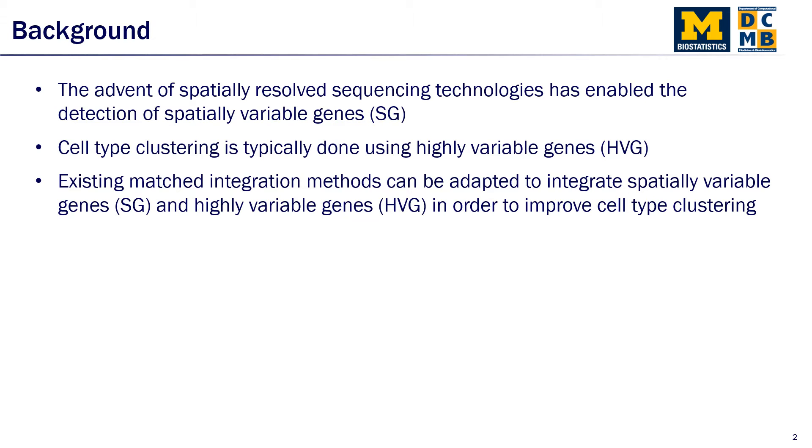So a little bit of background. The advent of spatially resolved sequencing technologies has enabled the detection of spatially variable genes which have a distinct expression pattern over two dimensional space. However, cell type clustering is typically done using highly variable genes, which does not use spatial information. So the motivation for this benchmark project is we want to adapt existing batch integration methods to integrate spatially variable genes and highly variable genes and see if we can improve cell type clustering.